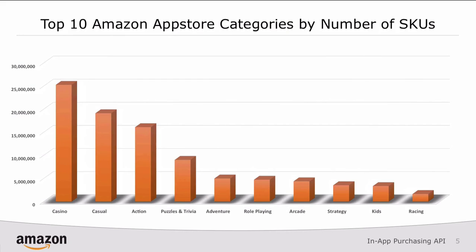Let's drill in. Inside of in-app purchasing, we create a store catalog. That store catalog consists of SKUs. If we look at the existing Amazon App Store today, as of March 2014, the top 10 Amazon App Store categories are seen here. The number of SKUs across all of the apps in the store are shown on the left, and you can see this is in millions. For example, casino apps today have the highest number of SKUs, ranging a little bit over 25 million.